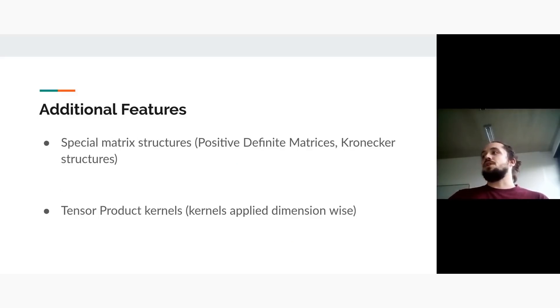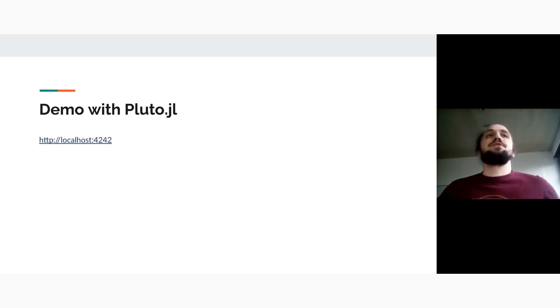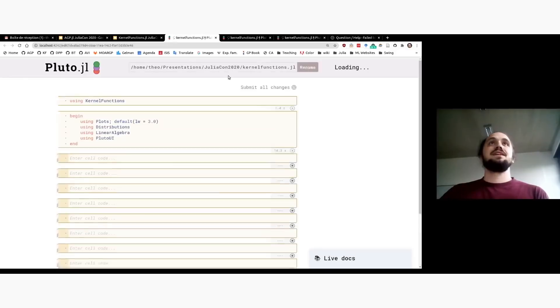We also added additional features like being able to get directly special metric structures. So positive definite matrices from PDMats.jl, Kronecker structures. If you're in a grid, for example, you can save a lot of computations. And we are now progressively adding more and more features to make things work more smoothly. Before going to a demo, this package has still some issues, especially with automatic differentiation where some operations are not the best possible. But we are working hard on this.